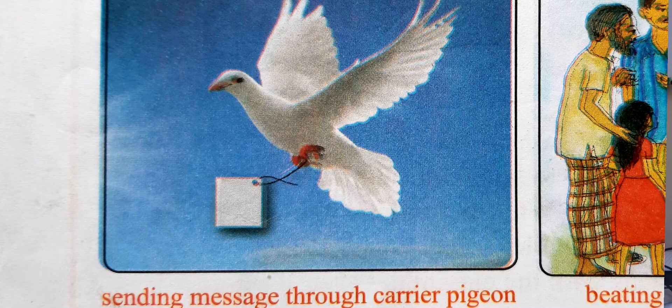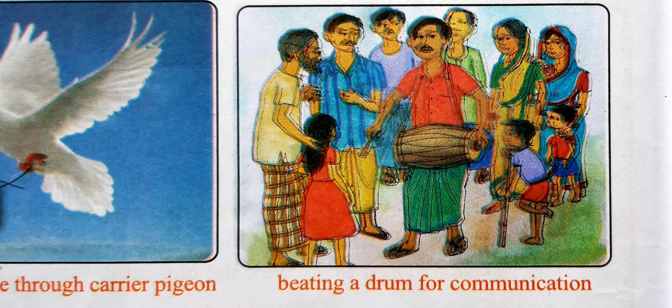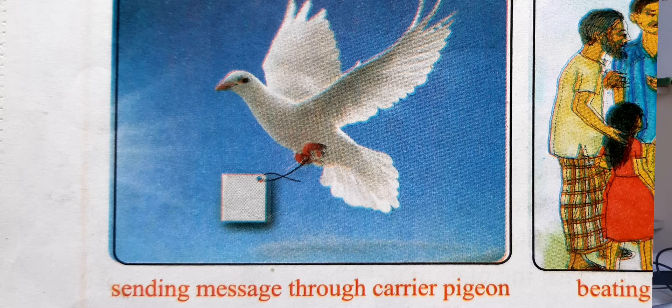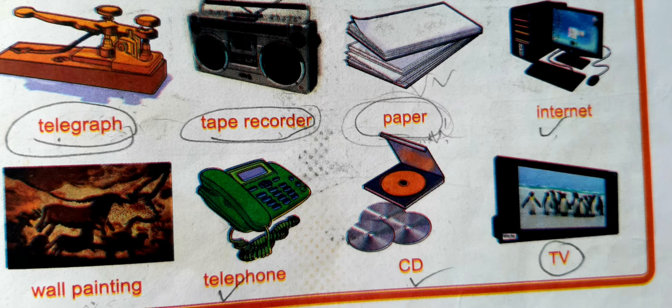Now I'm going to talk about the development of communication technology. Many years ago in ancient times, people didn't have much technology. The history of communication technology began thousands of years ago with the use of smoke signals and drums. The next stage involved exchanging information through sending letters and introducing newspapers, books, and journals.